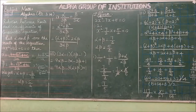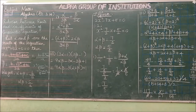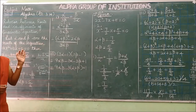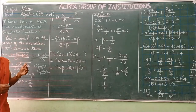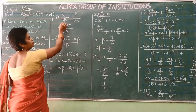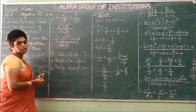Now look at problem number 3.14, first problem: write each of the following expressions in terms of alpha plus beta and alpha beta. The first expression given is α/(3β) + β/(3α).